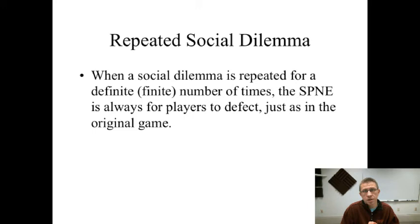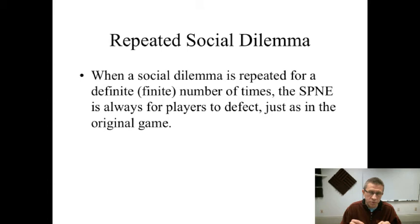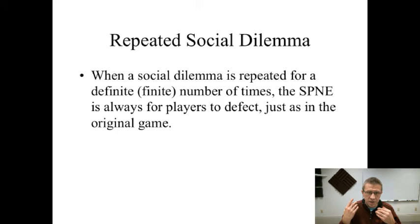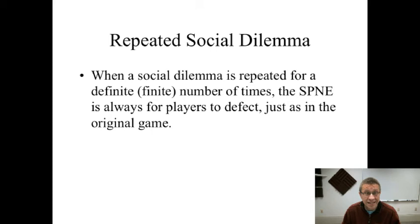When a social dilemma is repeated for a definite or finite number of times, the subgame perfect Nash equilibrium is always for players to defect. So if you have a prisoner's dilemma type game where they defect in one period and you say we're going to play it four times instead, will that change anything? No, they will still defect every single time period. If it's repeated 37 times or a thousand times and you know it's going to be exactly that many times, they will defect every single period — the subgame perfect Nash equilibrium is indeed always to defect, just as in the original game.